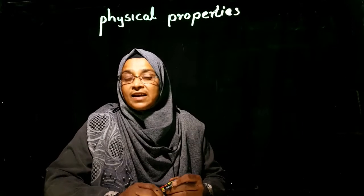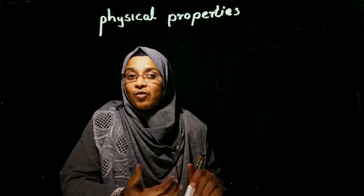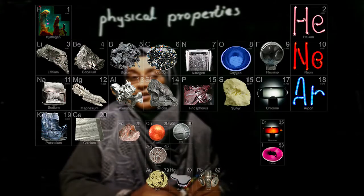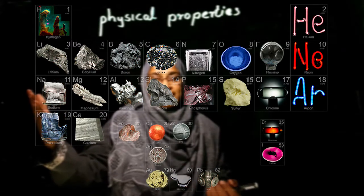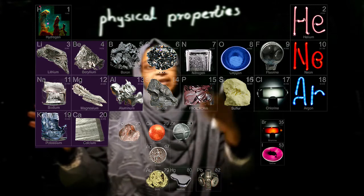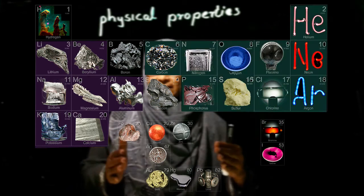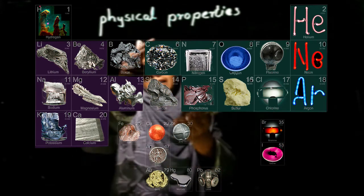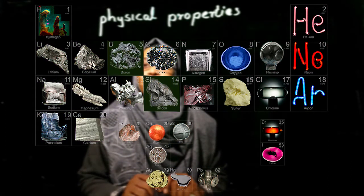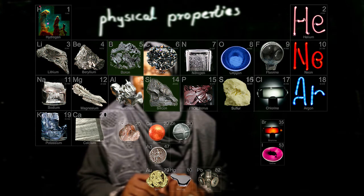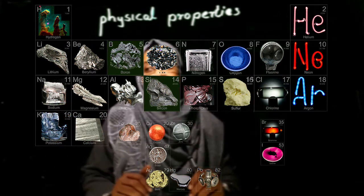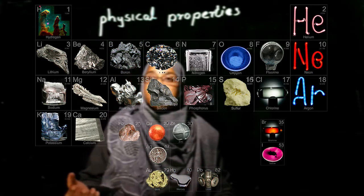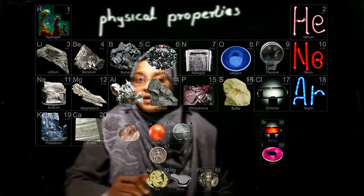Now let us discuss the physical properties. We have already known about the first 20 elements in a periodic table. On the left side are metals, on the right side are non-metals, and in the middle there are two elements — silicon and boron — which show properties between metals and non-metals. They are called metalloids.